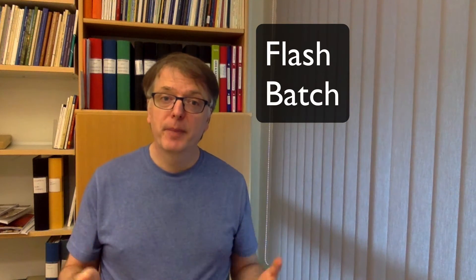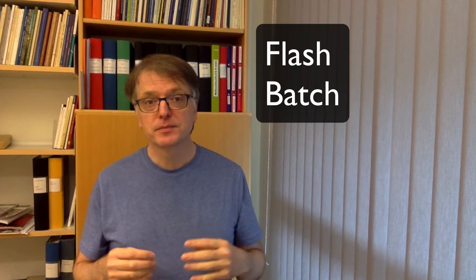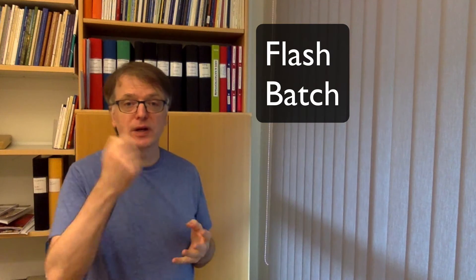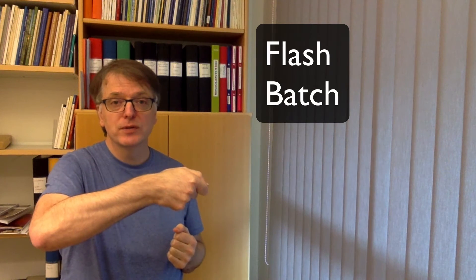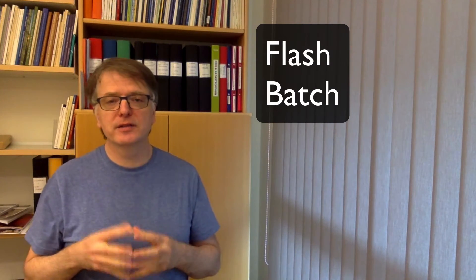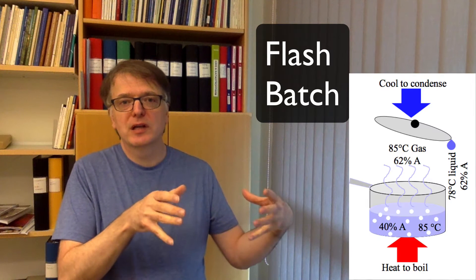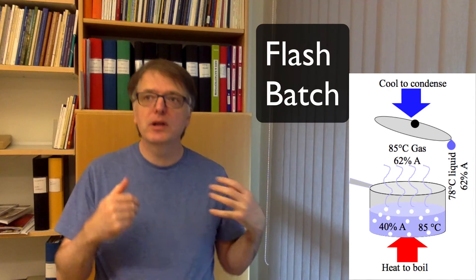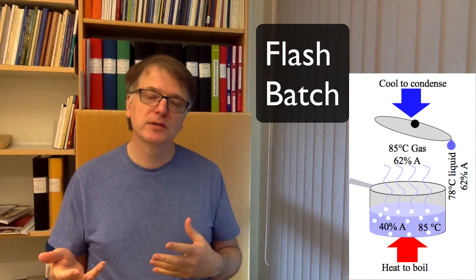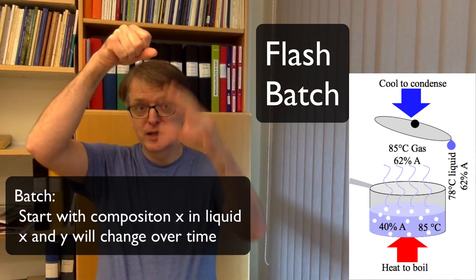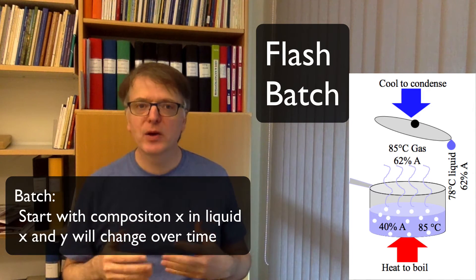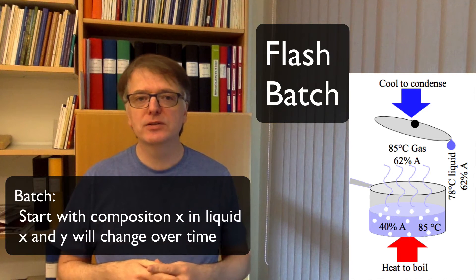Another option is to have a batch setup and you can either use it simply just to have like a pot on a stove and the thing that will happen then is that you start with a liquid with a certain molar fraction of the volatile component and then you bring it to boil and the first droplets will have, if you condense the gas that comes up, the first droplets will have one composition and then gradually that will change over time.